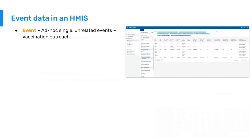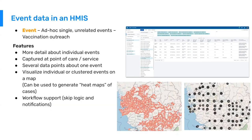The next data type is event data — ad hoc singular events that are unrelated to one another. In DHIS-2, we're able to capture data from each one of these events. A good example is a vaccination outreach campaign. Some features of event data are that we're actually able to see a lot of detail for individual events.